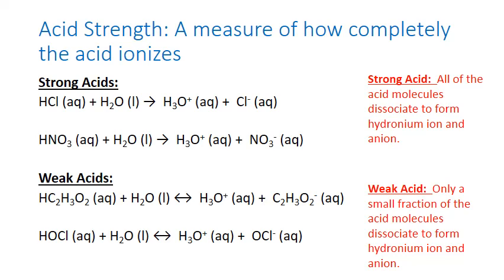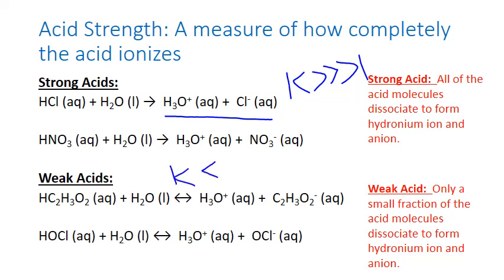One way of characterizing acid strength is to look at the equilibrium constant for the dissociation process. For strong acids, the forward reaction pretty much dominates, and at equilibrium all of the reactants have been transformed into products. As a result, the equilibrium constant for strong acids is usually very large — much greater than one. For weak acids, however, the reverse reaction has an appreciable rate, and at equilibrium you still have a significant concentration of the initial reactants. As a result, the equilibrium constant for most weak acids is less than one.